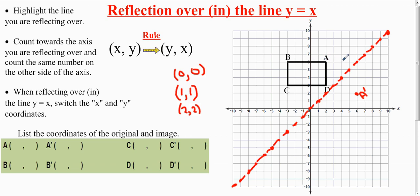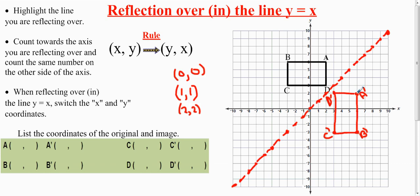I count B: one, two, three, four, five, six, seven, eight, nine — and that is B prime. Then I count D: one — I'm there — and then one down, which is D prime. C is one, two, three, four, five, six away, then C prime has to be one, two, three, four, five, six away — and that is C prime.